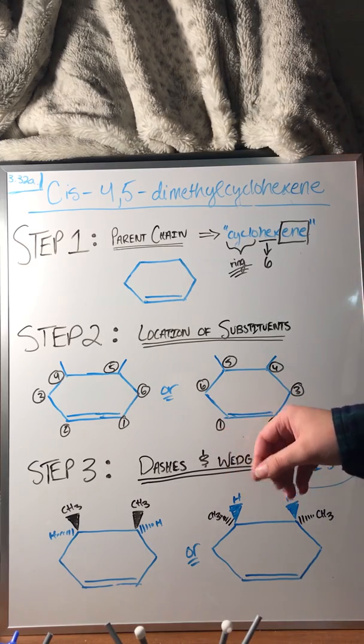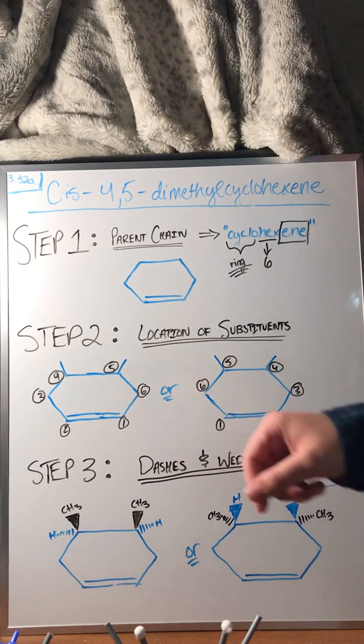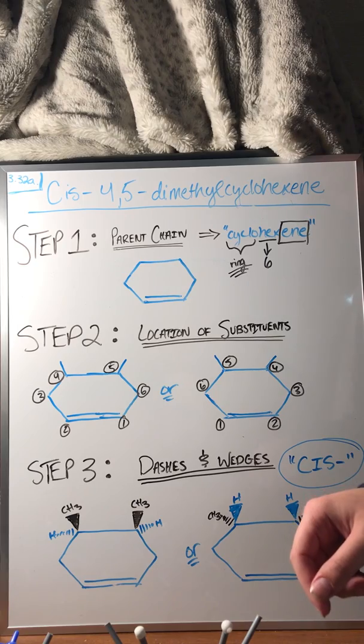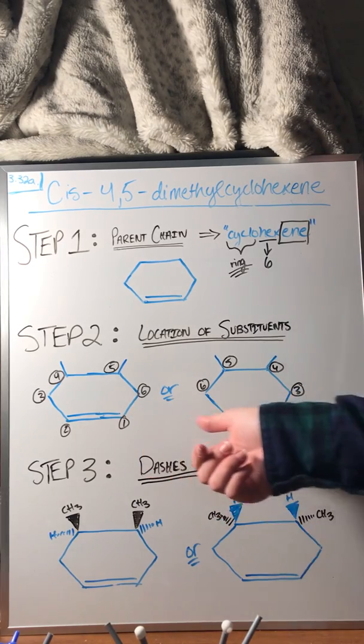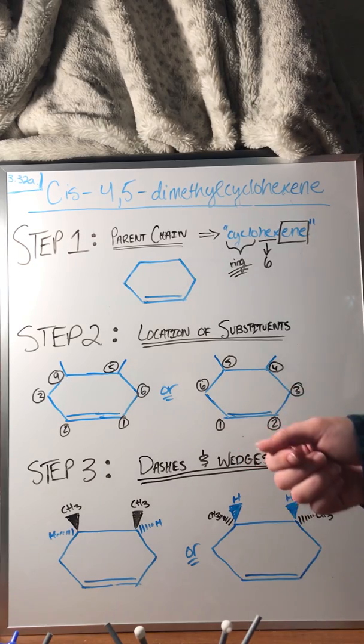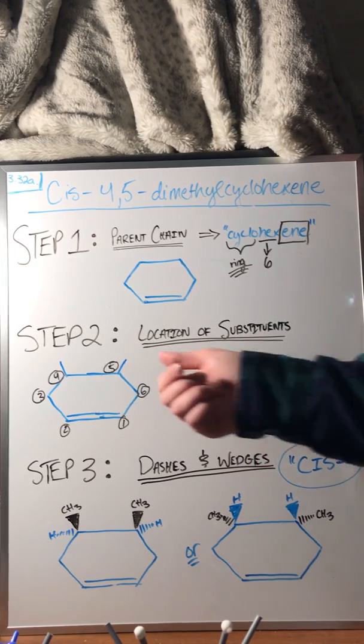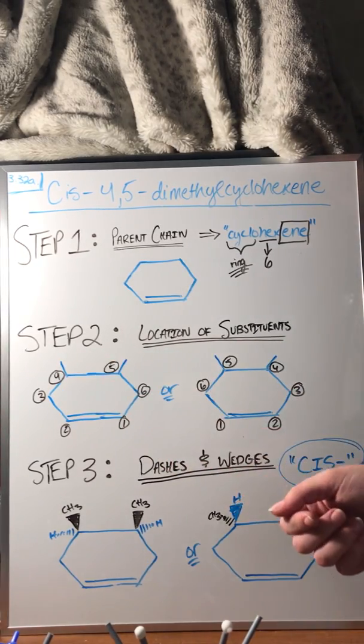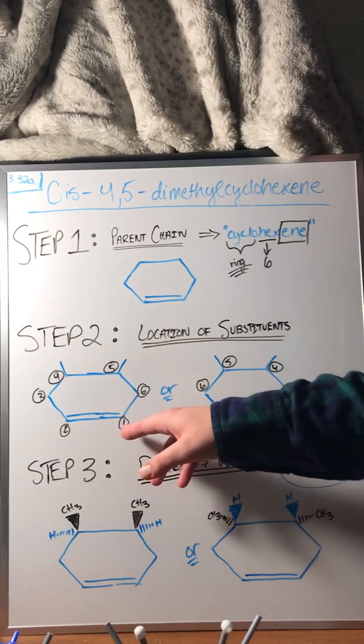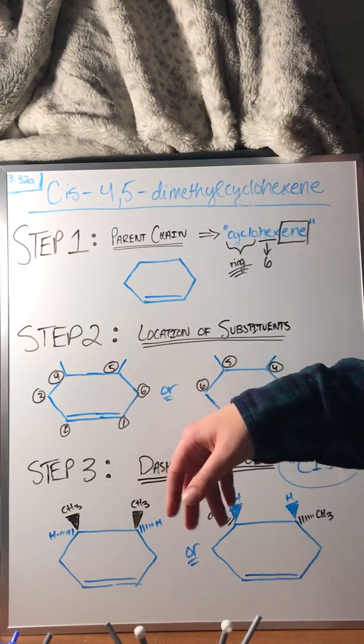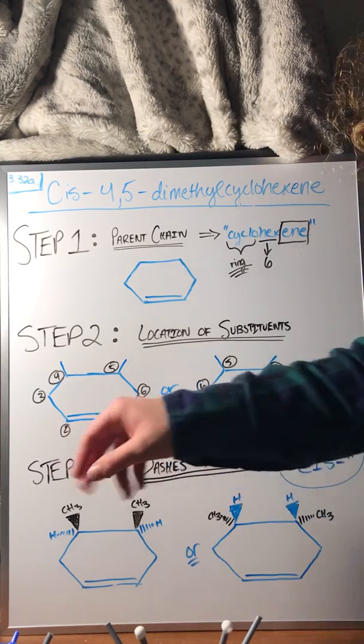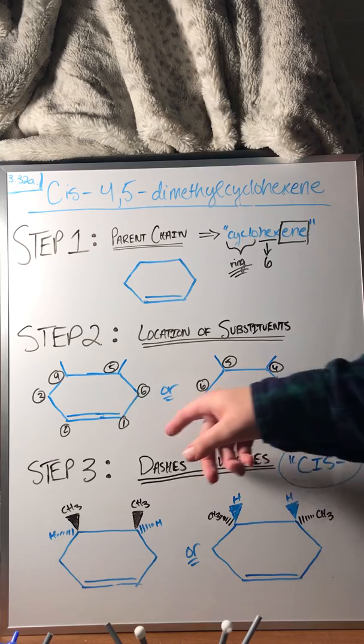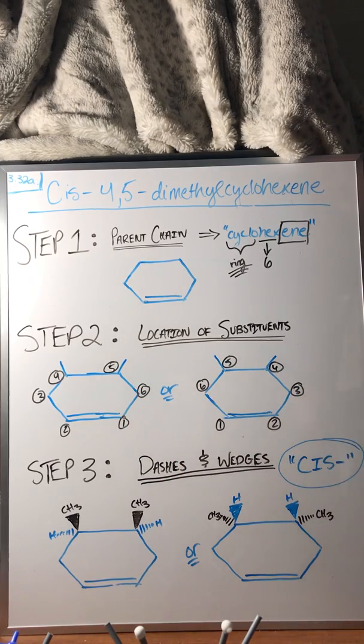So you can draw this two ways. You can number it two ways according to the IUPAC rules in this particular problem because either way you number them, left and right, you get the same numbers for the substituents. We begin by naming one of the carbons on the double bond. That's always the rule. If you have a double bond you start with one of those carbons moving towards the next carbon in the double bond. It gets the next least number.